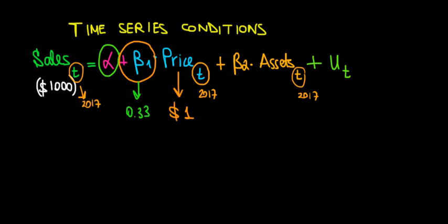Then how we read this is that when price of our jeans goes up by one dollar, the sales of our jeans is going to go up in 2017 by 0.33 times a thousand dollars because the units that we measure the sales is in thousands of dollars. So that's going to be 0.33 times a thousand dollars and if we solve the math that's $330. So $330 more sales in 2017 if price goes up by one dollar. That's literally how we read it.